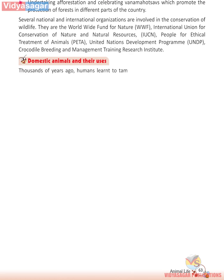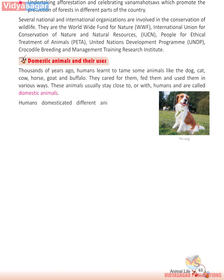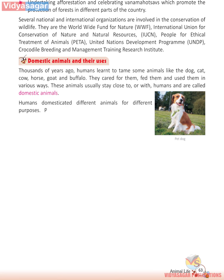Domestic Animals and Their Use: Thousands of years ago, humans learnt to tame some animals like the dog, cat, cow, horse, goat and buffalo. They cared for them, fed them and used them in various ways. These animals usually stay close to or with humans and are called domestic animals. Humans domesticated different animals for different purposes.